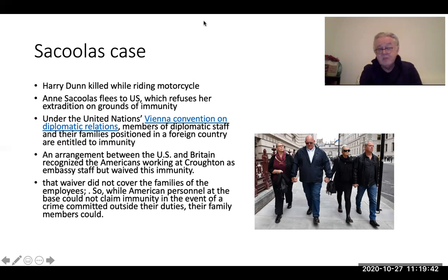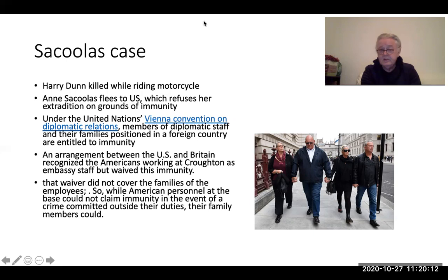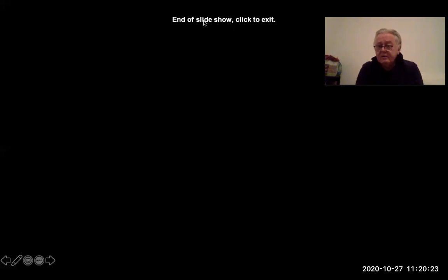The UK asked for her to be turned over, but the United States refused, claiming immunity. There was a loophole: the UK and US had a private arrangement waiving consular immunities for officials, but apparently overlooked family members. Anne Sacoolas, as a family member, benefited from that immunity and was able to flee the jurisdiction. The agreement between the two countries has since been changed, but without retroactive effect, so the outcome of this case remains uncertain.